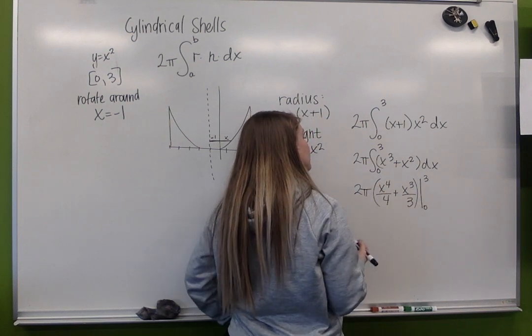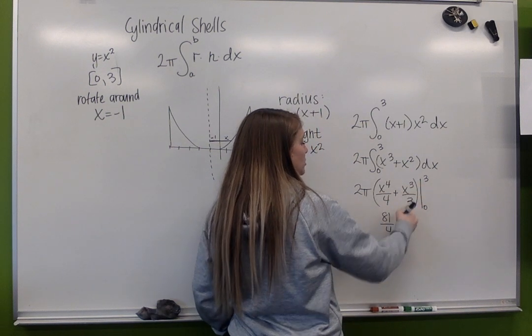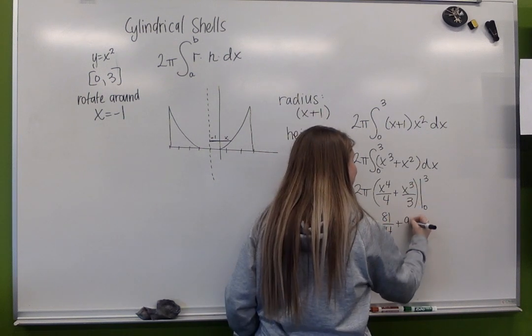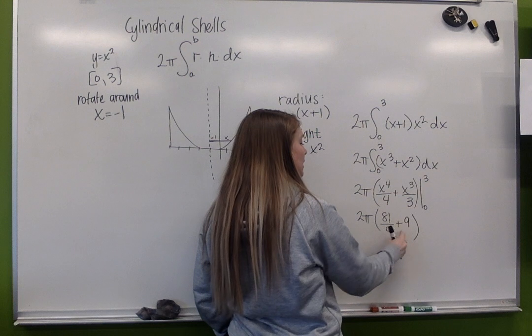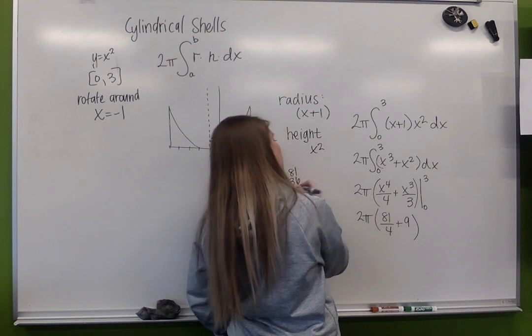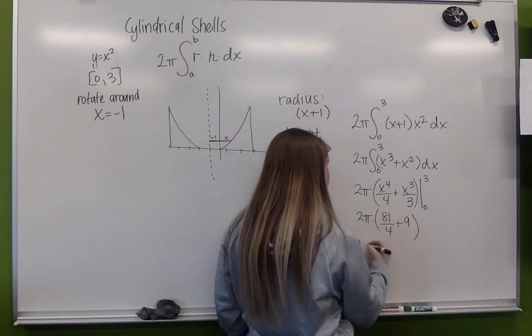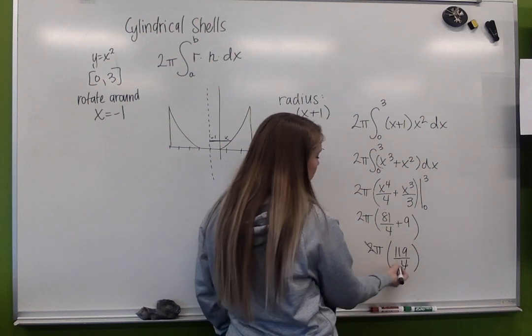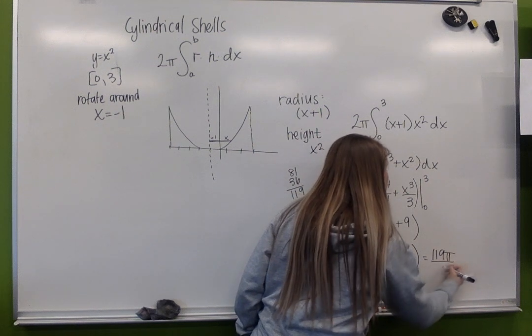So I'm going to plug in 3. 3 to the 4th is 81 over 4. 3 cubed plus 3. Sorry, 3 cubed divided by 3 is 9. Times 2 pi. Common denominator, I'm going to change my 9 to 36 over 4. So 81 plus 36 is 119. 119 over 4. And then I'm going to simplify the 2. So I'm going to get 119 pi over 2.